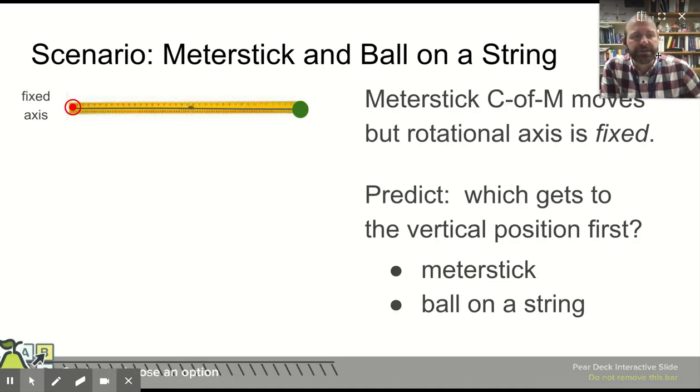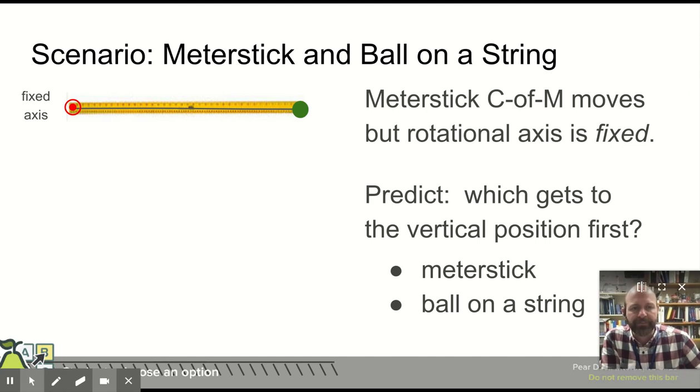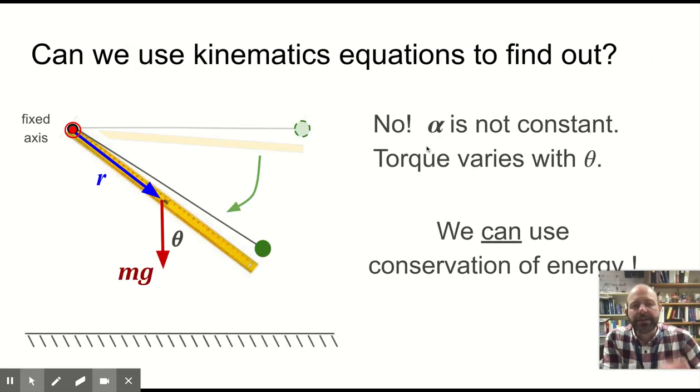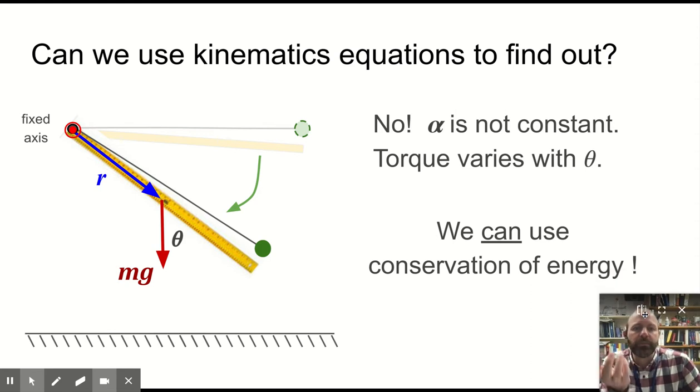So here's a scenario, and this is a scenario we looked at in class. You have a meter stick and a ball on a string, and the question is, which one will get to the lowest point first? And it turns out that we can't use kinematics to solve this because alpha is not constant. We can use conservation of energy.